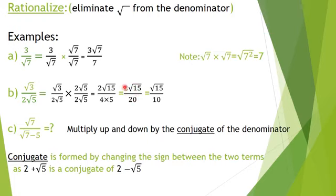The denominator is 20 with no radical, so the answer is 2 radical 15 over 20. I can simplify by dividing numerator and denominator by 2, giving radical 15 over 10. Now if I have an expression in the denominator — not just one term but an expression with a minus — what should I do?